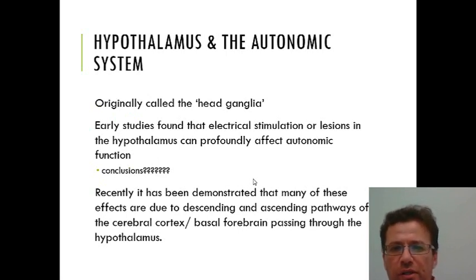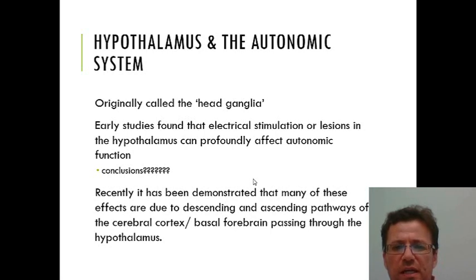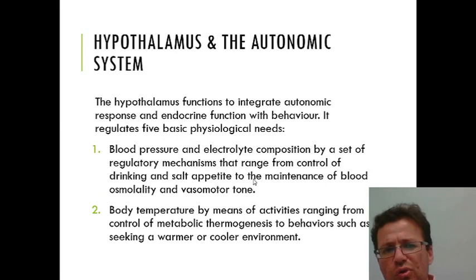The hypothalamus was originally called the head ganglia of the autonomic nervous system, because early electrical stimulation studies and lesion studies showed profound effects on the ANS. It was believed the ANS was controlled from the hypothalamus. However, more recent studies have shown that many pathways influencing the ANS actually move from the ANS to the cortex, passing through the hypothalamus — so those areas being stimulated or damaged were not necessarily the hypothalamus itself controlling the ANS.